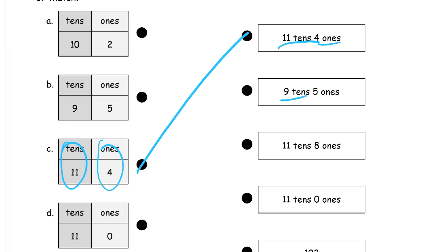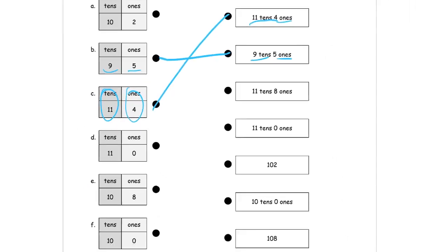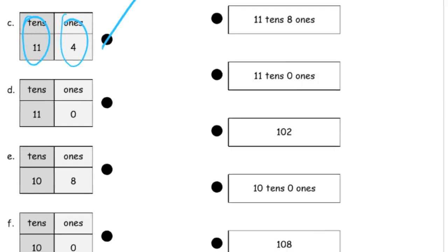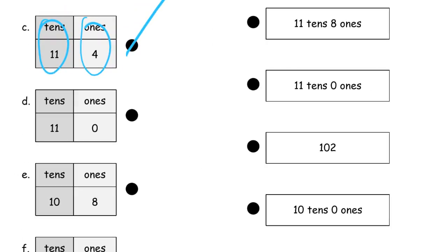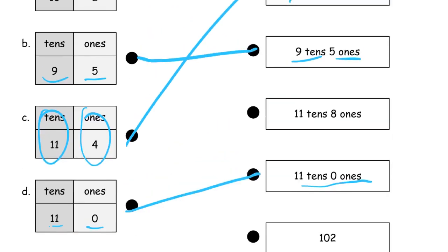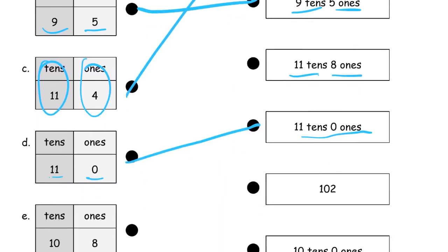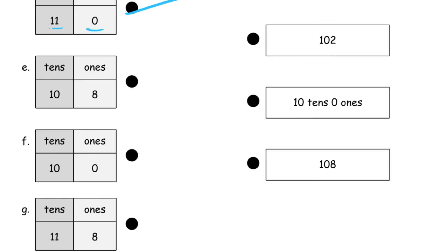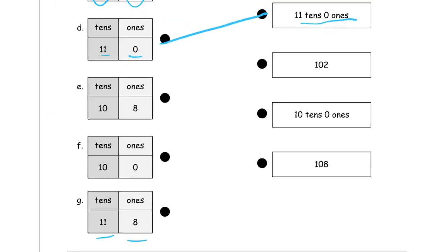And if I'm looking for nine tens and five ones, I have to look for, there it is. Nine tens, five ones. So these two match. We get to 11 tens, zero ones. That matches right over here. And 11 tens, eight ones. We need 11 tens, place value box with 11 tens and eight ones. There's 11 tens. There's eight ones. So those are going to match. Let me zoom into that one. The bottom one will match up there.